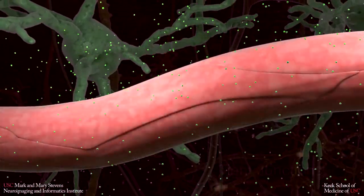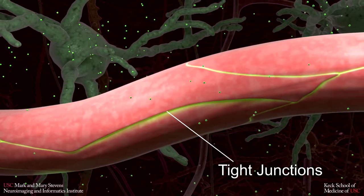The first of which is the tight junctions between endothelial cells, restricting much of what can pass through.